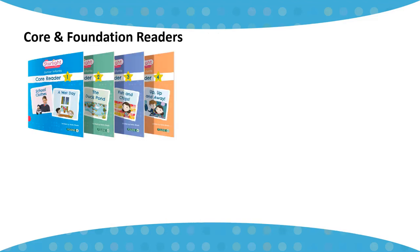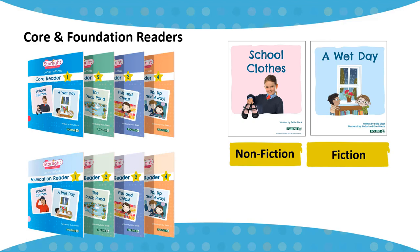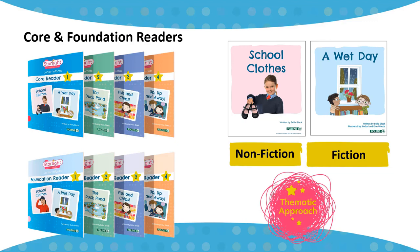There are four core readers for each infant class. Each reader contains a mix of fiction and non-fiction texts, providing a gentle introduction to the genre. The foundation readers are simplified versions of the core texts. They feature the same content as the core readers but are at an easier reading level for differentiation. The core and foundation readers are based around the same theme and genre as the oral language posters and big books.